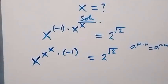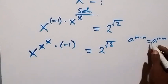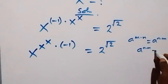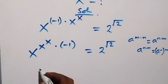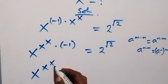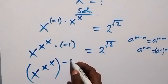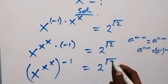In the next step we can separate this out. What we have — a raised to power n times n — we can write it as a raised to power n, then raised to power n. So it implies we can write it as x raised to power x, raised to power x, then raised to power minus 1, which equals 2 raised to power root 2.